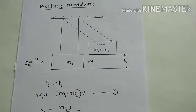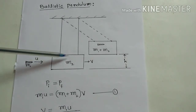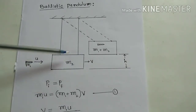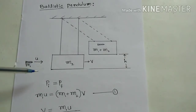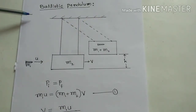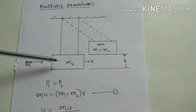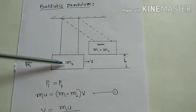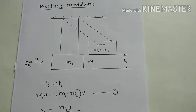This is class number 89 — the most important application, ballistic pendulum. You are seeing the figure here. There is one heavy block of mass m2 connected with two strings from the ceiling. This block m2 heavy mass is hanging at rest. We are going to find out the velocity of the bullet that is fired from your gun.